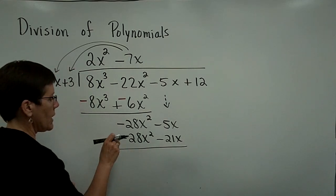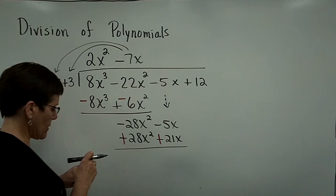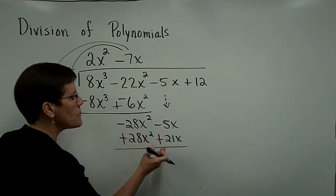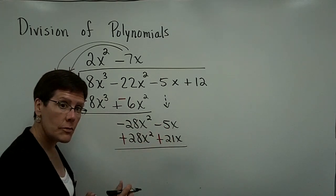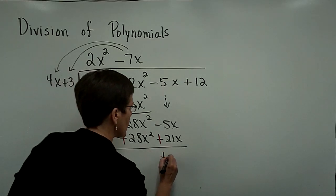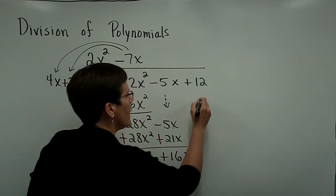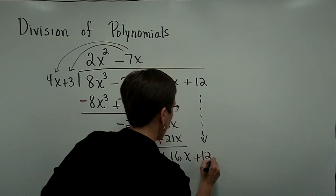Again, I'll change this sign and change that sign, because I'm adding the opposite. Those add to be 0. Negative 5 and a positive 21 add to be 16x, and I bring down this positive 12.